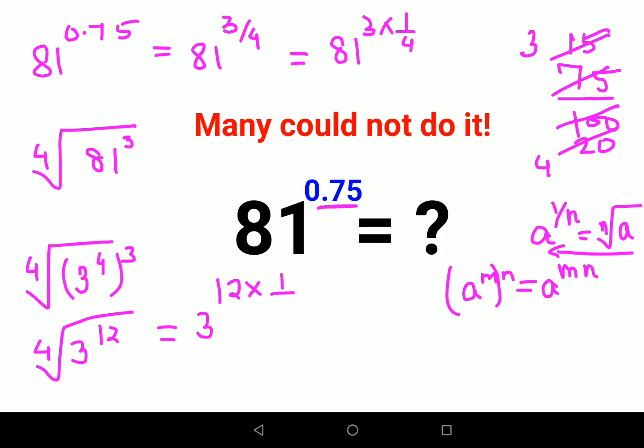Times 1 upon 4. And if you see, things are canceling, so basically you are getting the answer as 3 raised to 3, which is nothing but 27. 27 is your answer for this particular question.